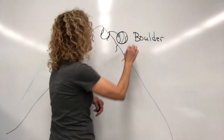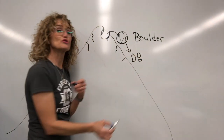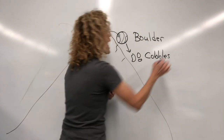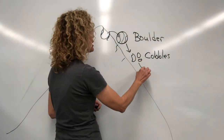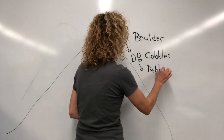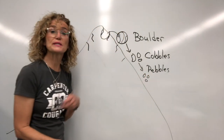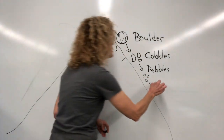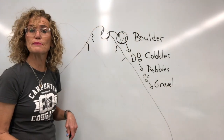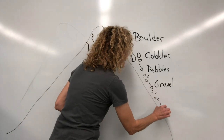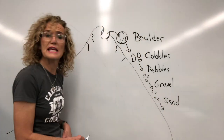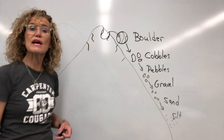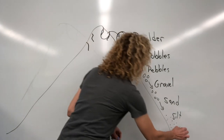Those cobbles keep rolling down the mountain. Gravity is a pulling force, and as they roll down they continue to break and turn into gravel. The gravel keeps rolling down the mountain and breaks into sand. The sand keeps rolling down the mountain and becomes silt. And then, if the silt gets wet and is in water for a long time, it can become clay.